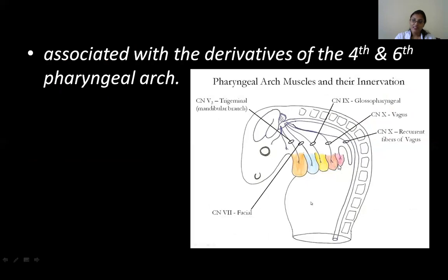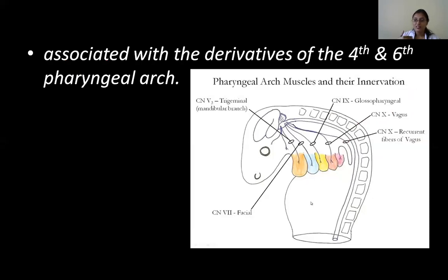The fourth and sixth pharyngeal arches give rise to muscles including the intrinsic muscles of the larynx, constrictors of the pharynx, muscles of the palate, and the upper esophageal striated muscle. The vagus is branchiomotor to these structures. It also sends parasympathetic efferent fibers to the thorax — via the cardiac plexus and pulmonary plexus, it innervates the heart and lungs. The parasympathetic action on the heart is cardio-inhibitory, and on the bronchi it is bronchoconstrictor.